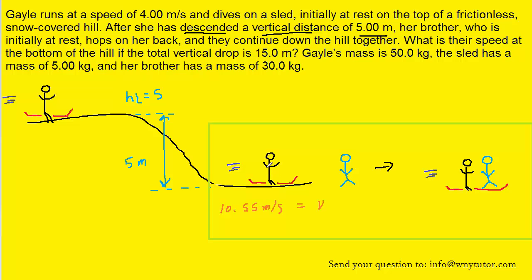Now, as stated in the question, Gale and the sled are going to approach the brother, and the brother is going to jump on the sled so that everyone is happily traveling together. Well, this goes back to another collision situation, so we can use the conservation of momentum once again.